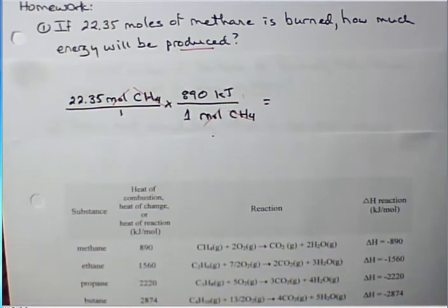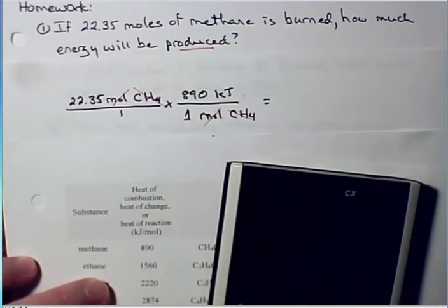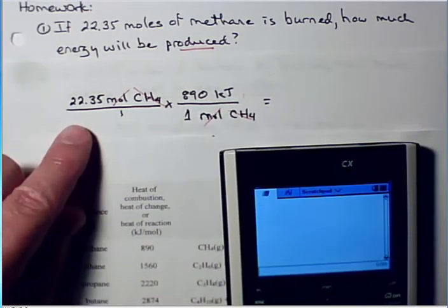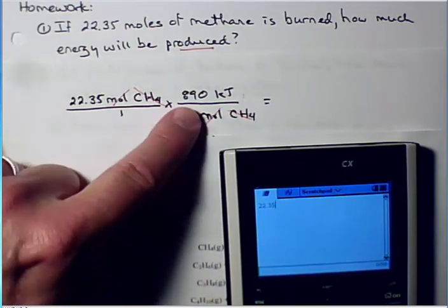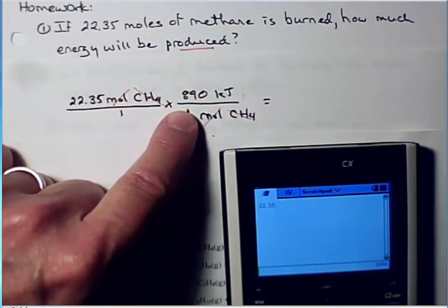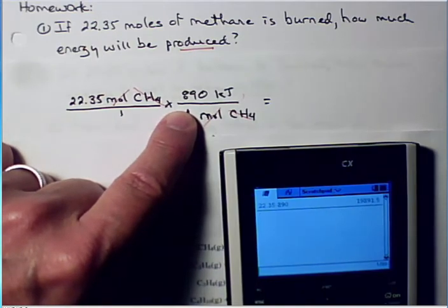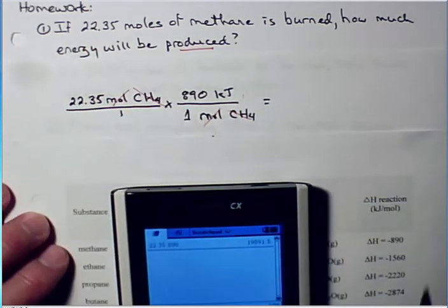We just got to do the math now. I don't have my calculator going on my computer yet, so let's pull out a calculator the old-fashioned way. 22.35 times 890, and I get 19,891.5.